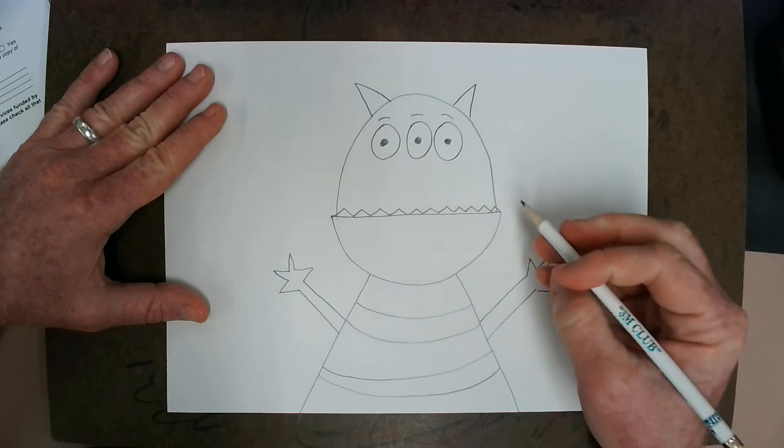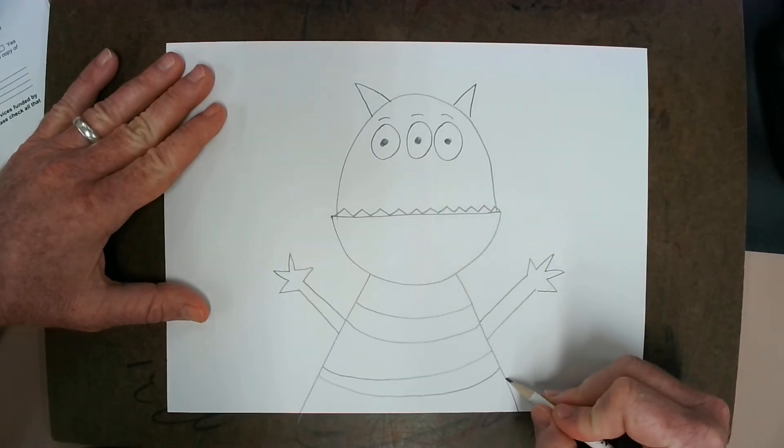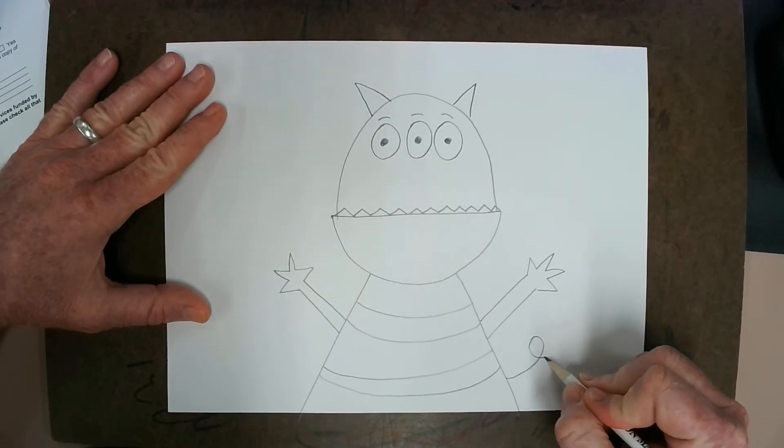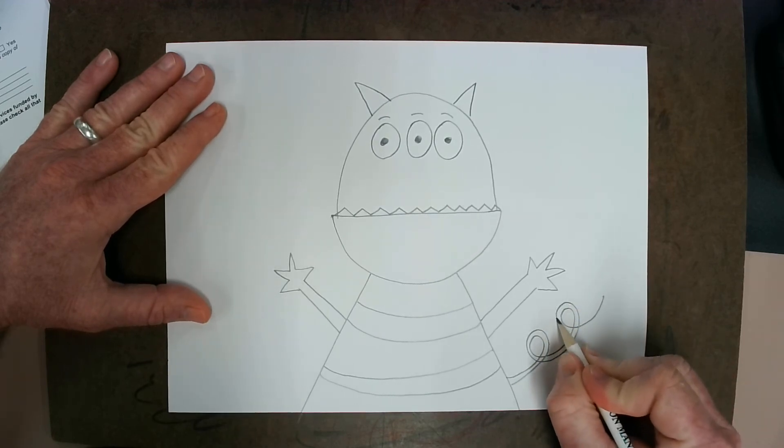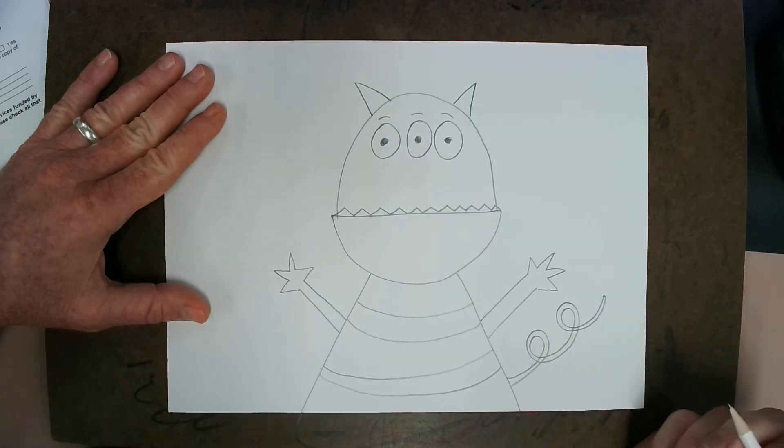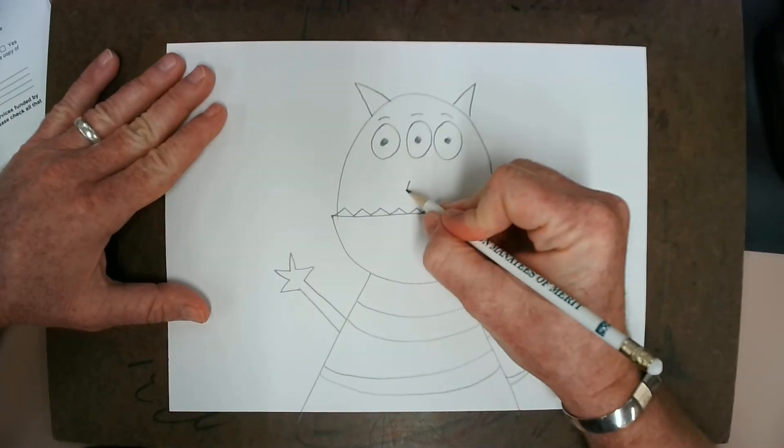And now, the only line I haven't used is a loopy line. So, maybe I will give him a funny little tail using a loopy line. And I'm following around so I have something to color instead of just going right over the line. There we go. There's our silly monster.